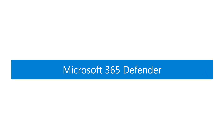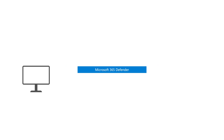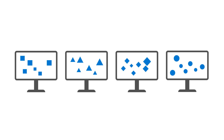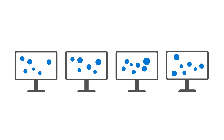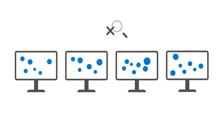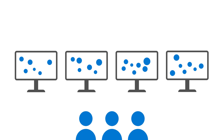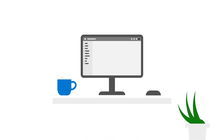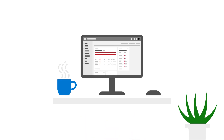Microsoft 365 Defender can stop attacks and persistence before they happen across all domains. It automatically makes an enormous amount of normalized threat data available, without the painful and time-consuming task of analyzing it. To give security teams leverage over those threats before they become attacks, Microsoft 365 Defender removes the confusion and clutter of siloed security portals.